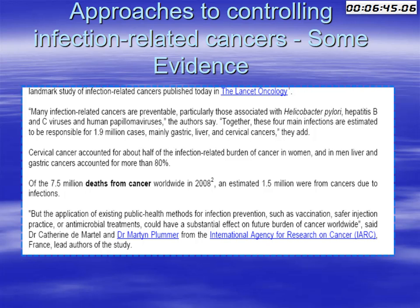Together, these four main infections are estimated to be responsible for 1.9 million cases, mainly gastric, liver, and cervical cancers. Out of the 7.5 million deaths from cancer worldwide estimated in 2008, an estimated 1.5 million cases were cancers resulting from infections.